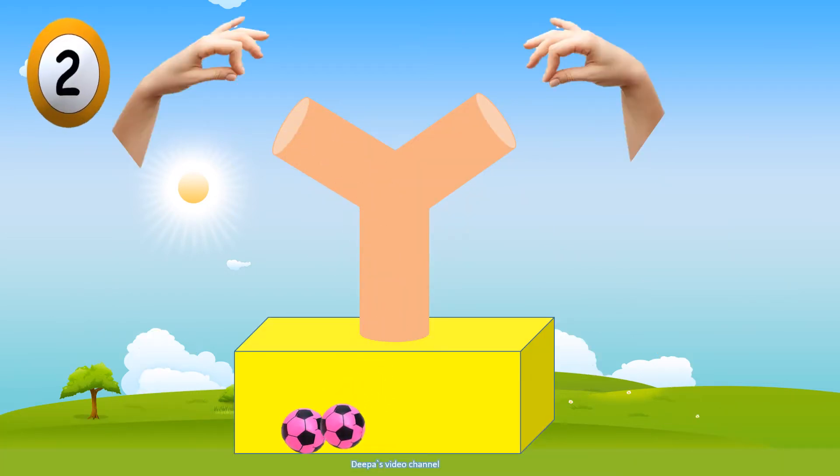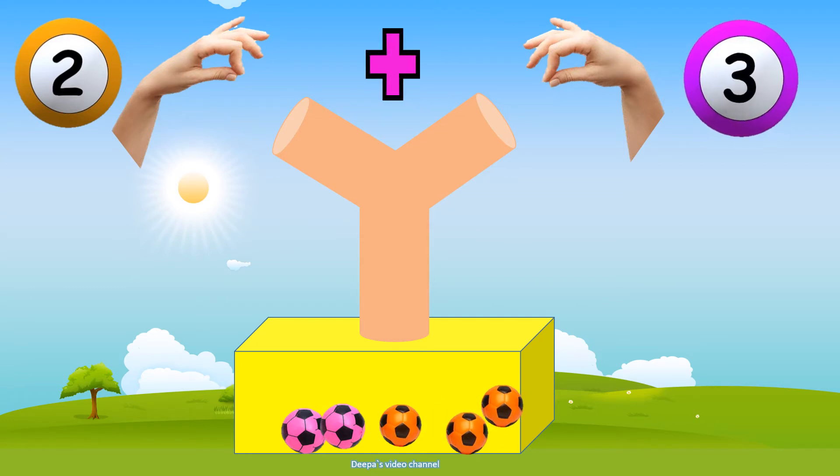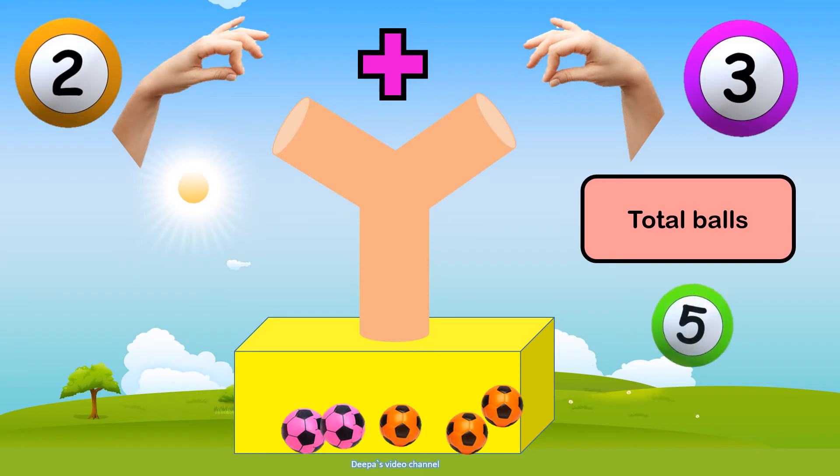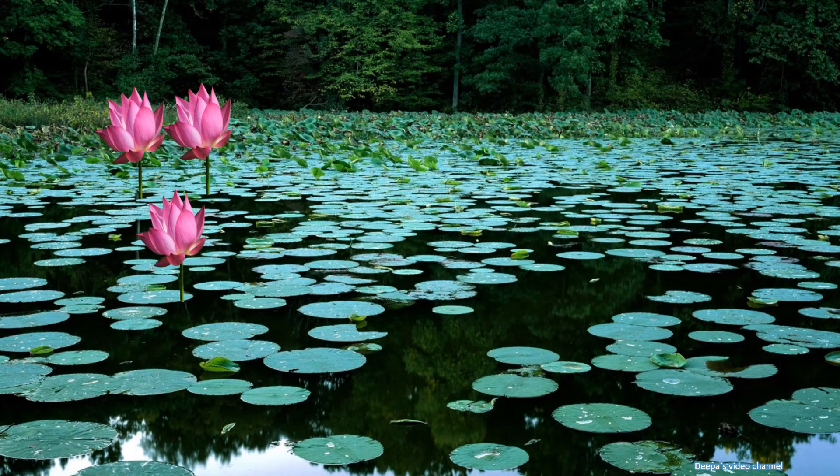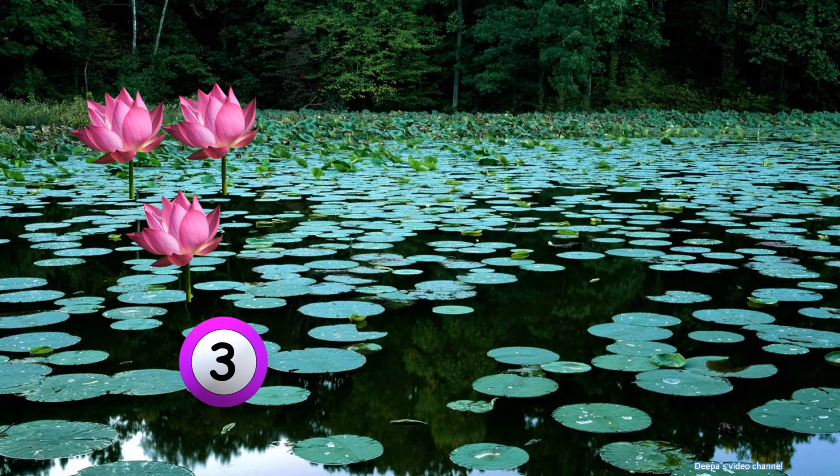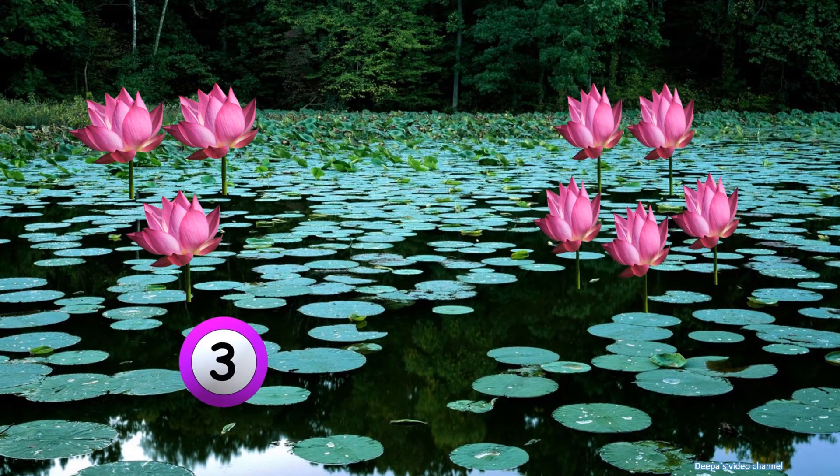Dropping two balls into this pipe. On its right side, dropping three balls. How many balls are in the yellow box now? One, two, three, four, five—five total balls.